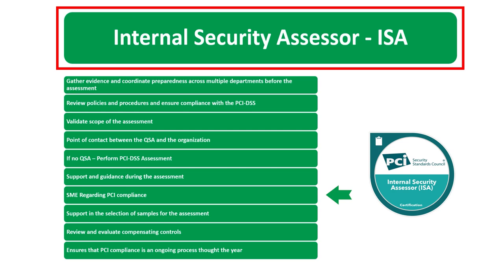The ISA also supports the selection of samples for the assessment. In large organizations with hundreds or thousands of servers and workstations, if there is no QSA, the ISA performing the assessment would select a sample that is an accurate representation of all the different systems within the environment.